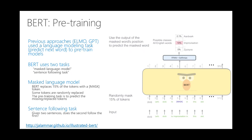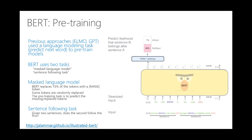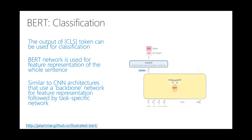The sentence following task works like this: given sentence A — 'the man masked to the store' — and sentence B — 'penguin masked a flightless bird' — the model predicts whether sentence B logically follows sentence A. The classifier says with 99% probability no, sentence B does not logically follow sentence A. For classification, the CLS token added to the beginning of the sentence is used as a classifier. The BERT network is used for feature representation of the whole sentence, similar to the backbone network in convolutional neural network architectures.